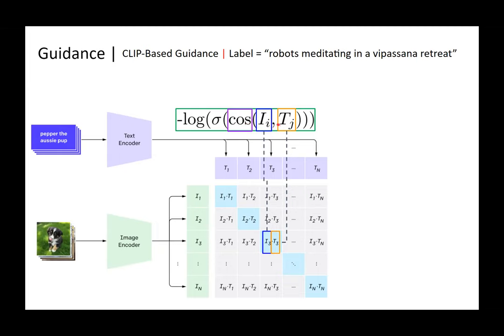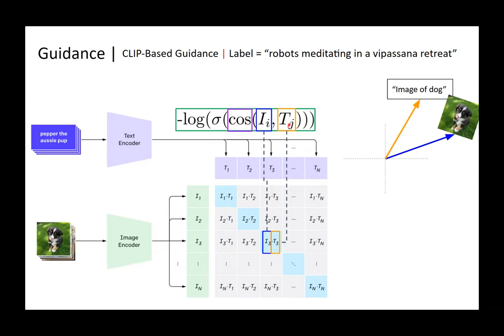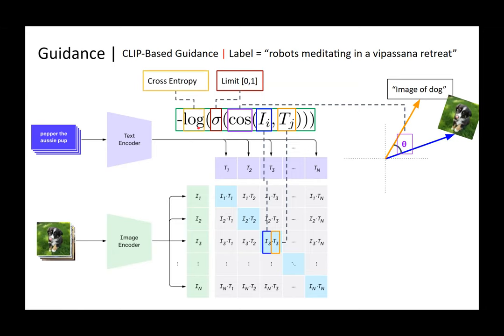Cosine similarity: although image and text embeddings are hyperdimensional vectors, consider them as 2D vectors on a plane. We want to minimize the angle theta between them — ideally zero so the vectors are parallel, maximizing cosine similarity. As the angle increases, cosine similarity decreases. A sigmoid function controls output between zero and one, and we use cross-entropy loss.